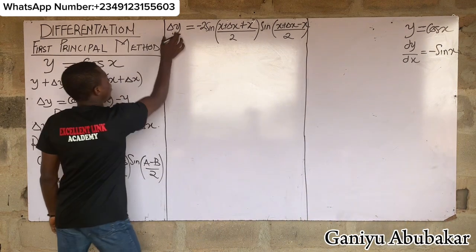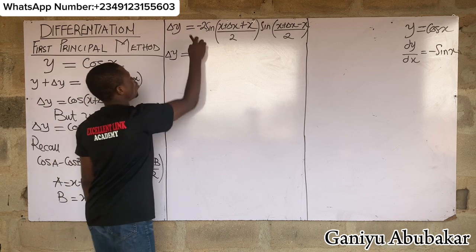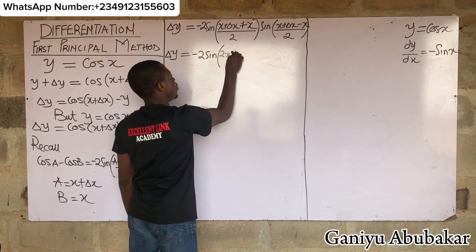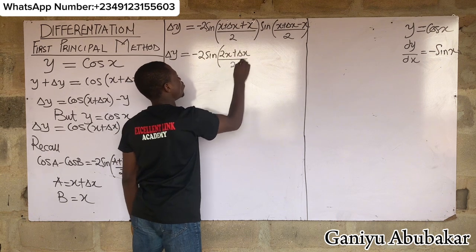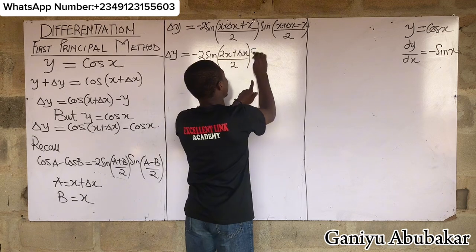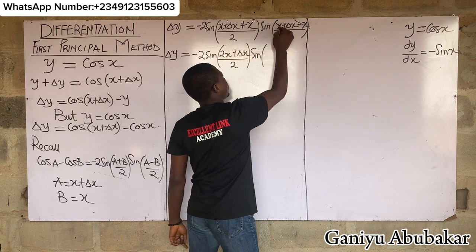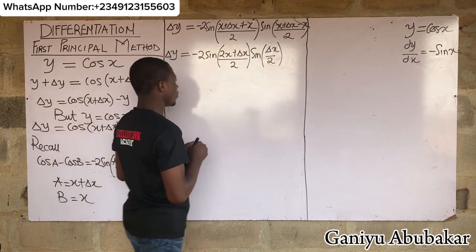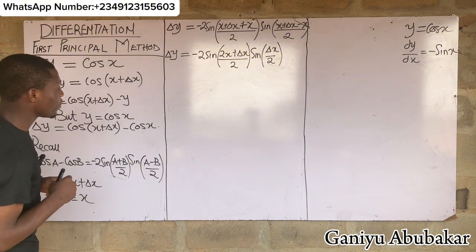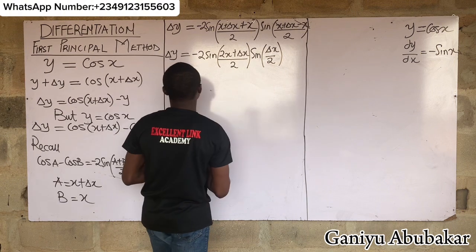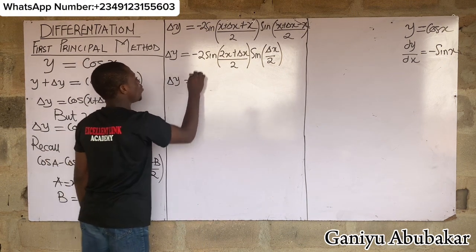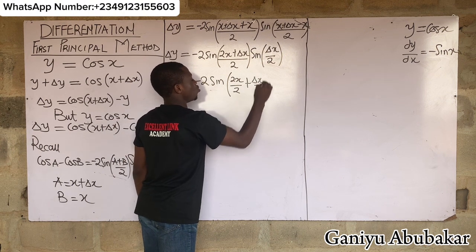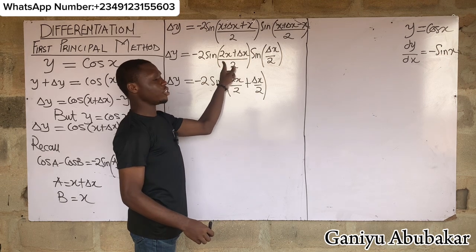Let's simplify. Δy equals minus 2 sin((2x + Δx)/2) times sin(Δx/2). Expanding the first sine argument: (2x + Δx)/2 equals x + Δx/2. And notice the x terms in the second sine cancel, leaving Δx/2.